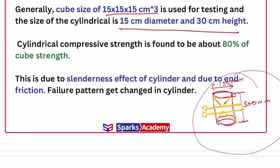This is the slenderness ratio. Due to the size of the cylinder and due to the end friction, the cylinder compressive strength (fc') is around 0.8 times the cube strength (fck). Now we have the compressive strength covered.